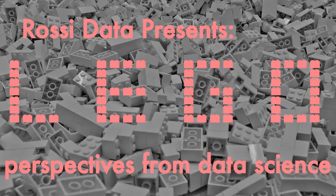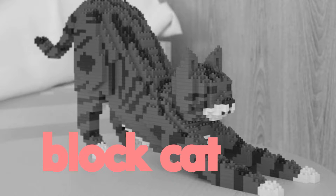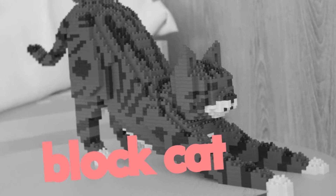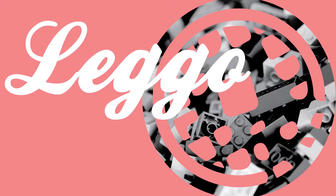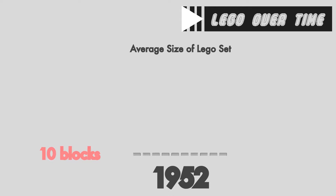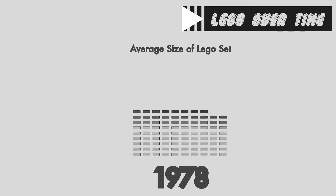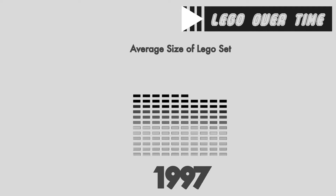Alright, so LEGO — we all love it. You could build a cat, you could even build a waffle, you could build really anything you want. It didn't start out this way though. It all began in Denmark with Ole Kirk Christensen peddling his 10-piece sets, but today it's gotten a lot bigger, with the average set reaching up to 160 pieces.